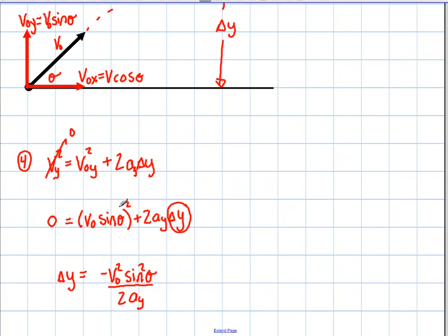And when I distribute this squared property through to the sine and the V initial, and then I subtract that over, I'm going to get negative V₀ squared sine theta squared. And then I just divide it by two A y. And I'm going to get this equation here.